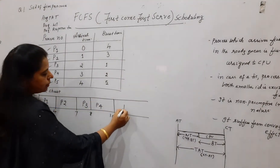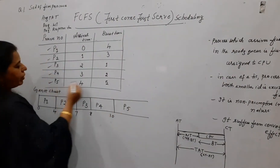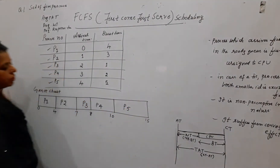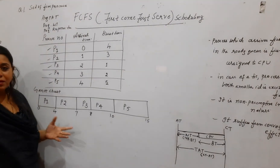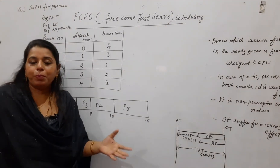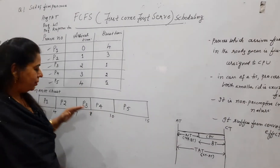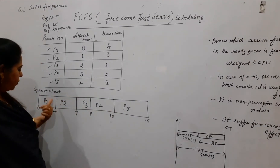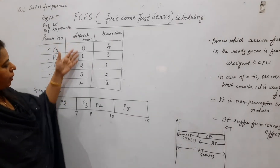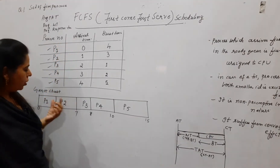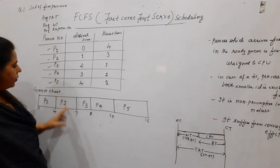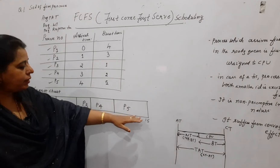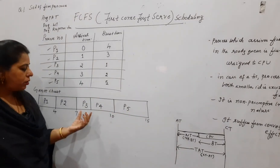P5 is the next process. P5 will complete its job at 10 plus 5, which is 15. This is the simplest of all algorithms — it takes very little time to compute. When P1 completes at time 4, all other processes are already in the queue. Your job is only to pick one process after the other in order of arrival, place it in the Gantt chart, and show the completion time.